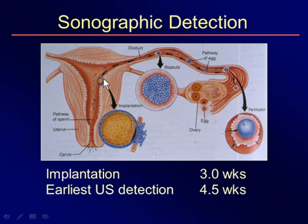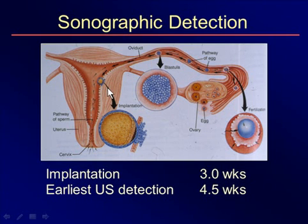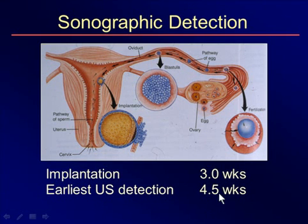Implantation is done in a very aggressive manner where the trophoblast burrows its way under the endometrial lining and sets up household with very active, aggressive formation of the trophoblast. We don't see any of this until four and a half weeks from dating by the first day of the menstrual period. So four and a half weeks menstrual age is the earliest that we could possibly see something with ultrasound.